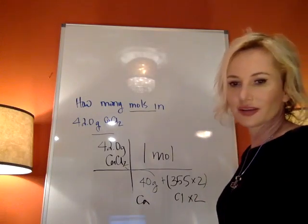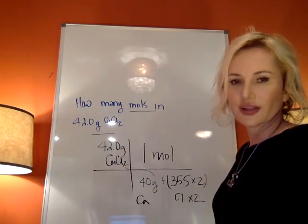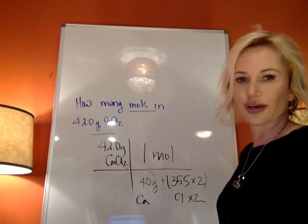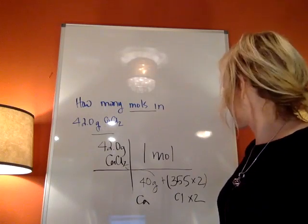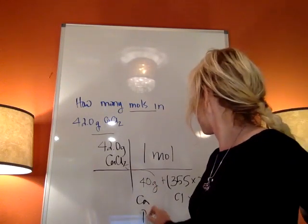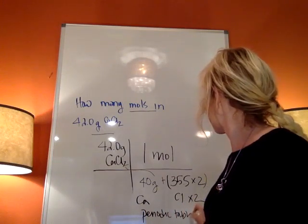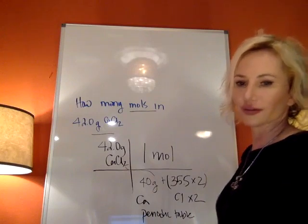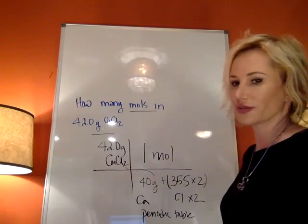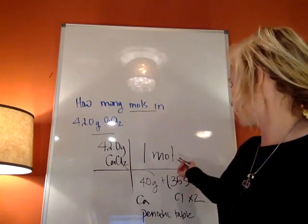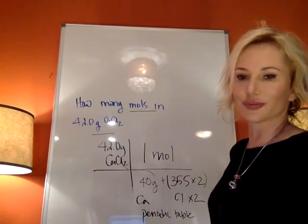The 40 is for the calcium. The 35.5 is for the chloride times two. Whatever mass - and this always comes from your periodic table - whatever mass you've found, you've just found the formula weight, or because you've done it in grams per mole, it's called the molar mass now.